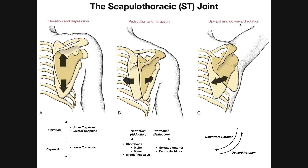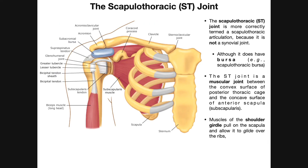We also have upward and downward rotation of the scapula. Upward rotation rotates the scapula in the superior direction, and downward rotation moves it back. All of those movements cause glide of the scapula against the posterior thoracic cage. That articulation between the subscapularis muscle anteriorly and the posterior part of the thoracic cage is the scapulothoracic joint, or really the scapulothoracic articulation.